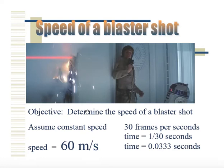So how does that compare to the speed of a bullet? The speed of a bullet is typically 10 to 15 times greater than that, so the speed of a blaster shot is very slow in comparison to a real bullet. Hope you got something out of this analysis today, and I hope it encourages you to do your own video analysis of movie clips or video games. Have a great day.